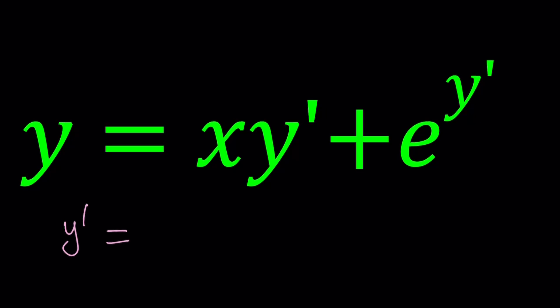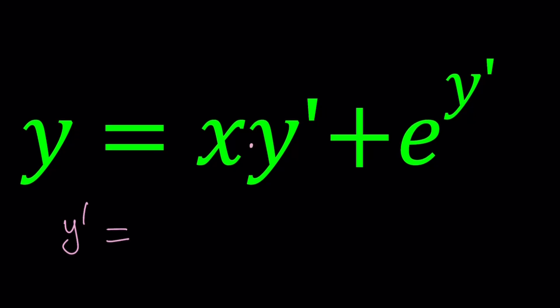Now, we have the product rule here, the derivative of x multiplied by y prime plus the derivative of y prime, which is y double prime, times x. That's the product rule.